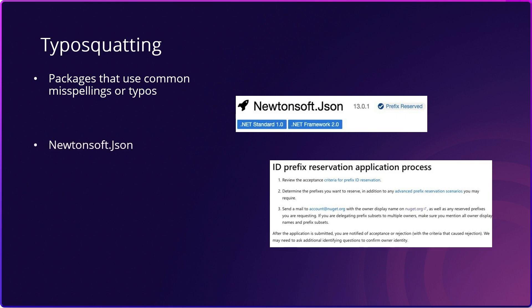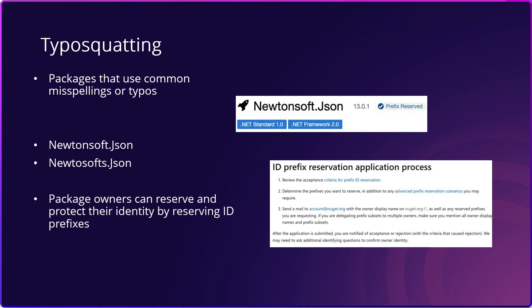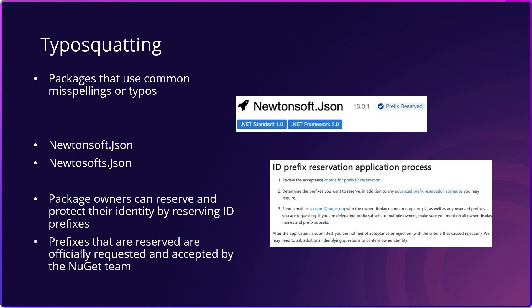Prefix reservation is the solution that NuGet has in place to combat this issue. It's like reserving your own land on NuGet and ensures that the package owner and your package ID cannot be exploited or used by anyone else. Each request is individually reviewed by the NuGet team. To learn more about the process and request prefix reservation for your package, be sure to check out the link in the description.